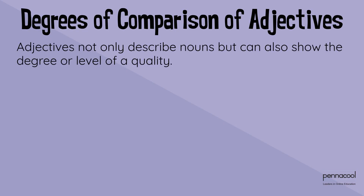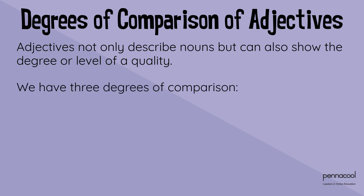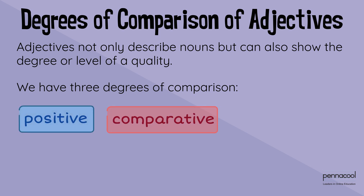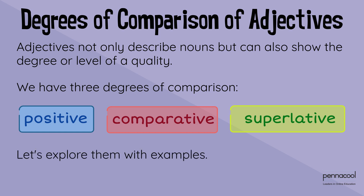Adjectives not only describe nouns, but can also show the degree or level of equality. We have three degrees of comparison: positive, comparative, and superlative. Let's explore them with examples.